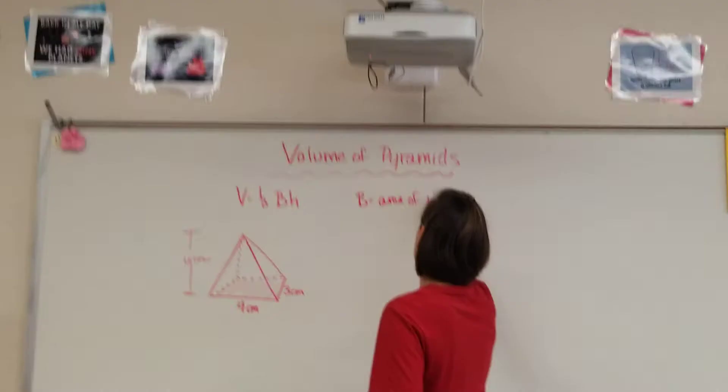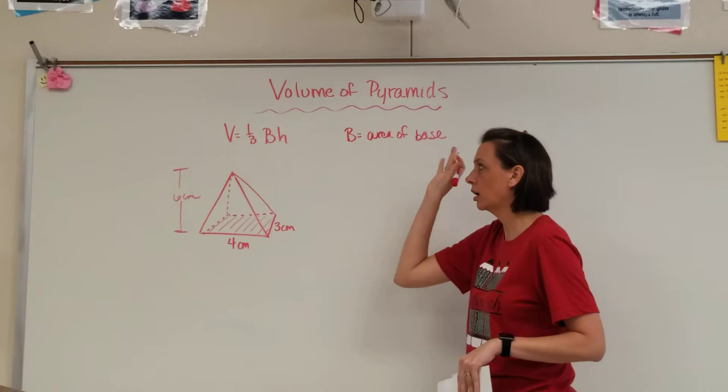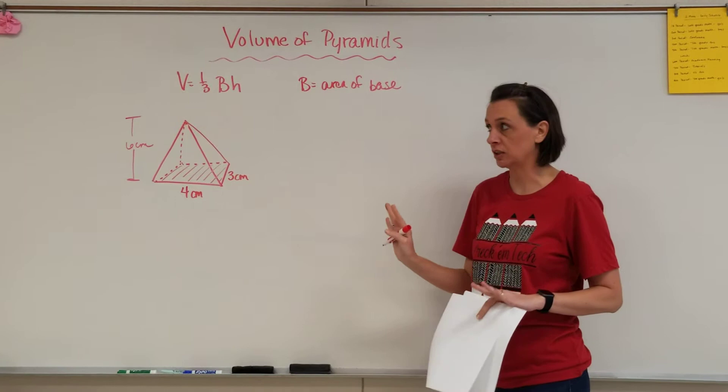On your homework, they are all going to be rectangular prisms, so that's all we need to worry about. So in this case, our big B is going to equal the length and the width of just the base of the pyramid.